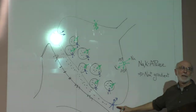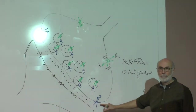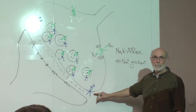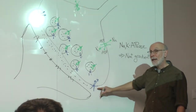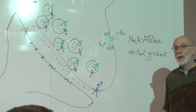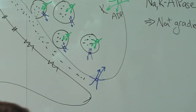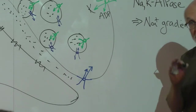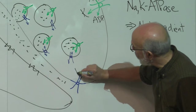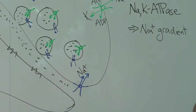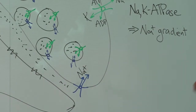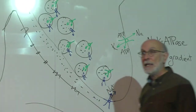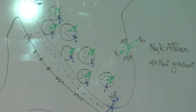What is this? It's a secondary active transporter — you've got that right. One of the arrows is sodium flowing in down its concentration gradient, as established by the sodium-potassium ATPase. But the other arrow is not calcium.